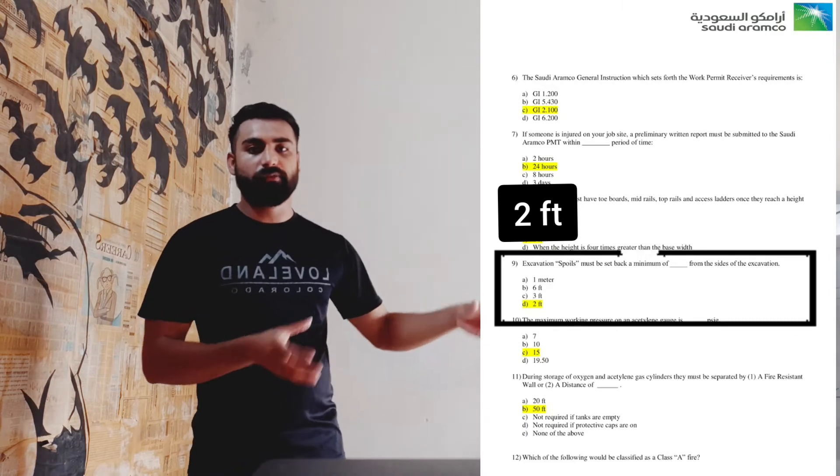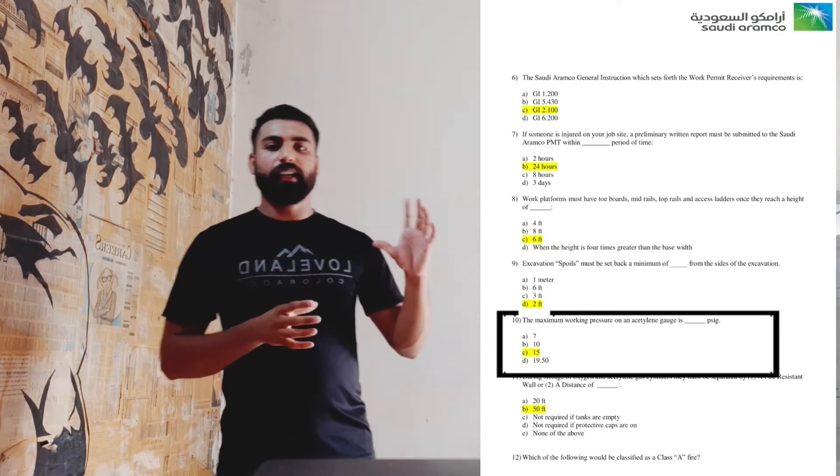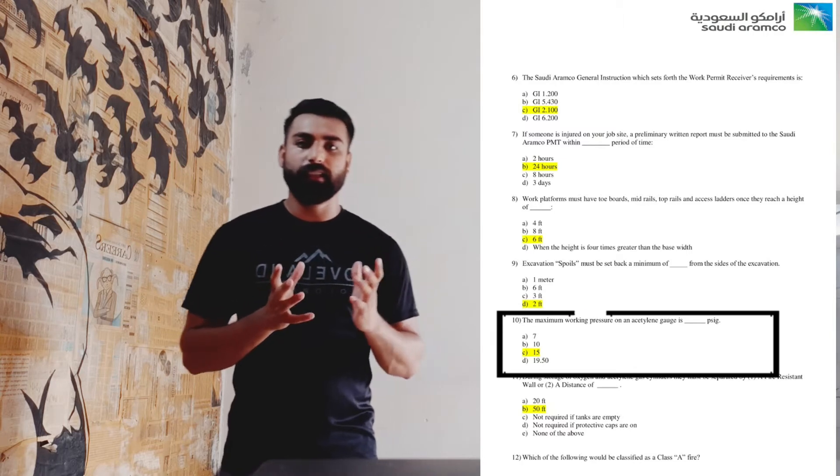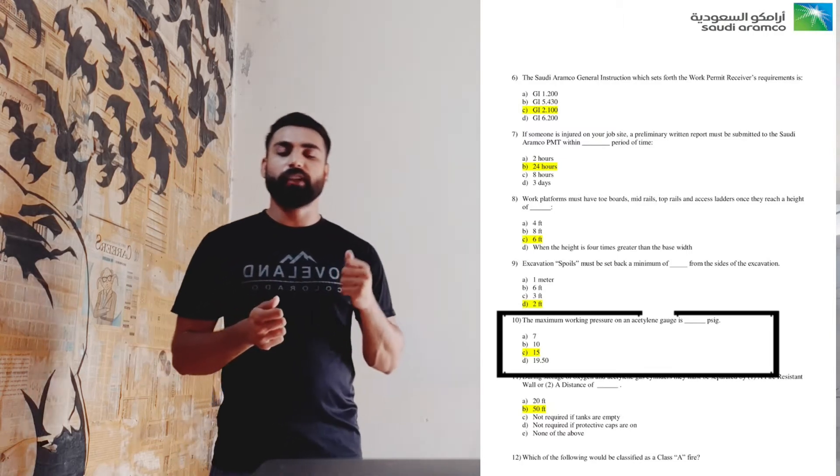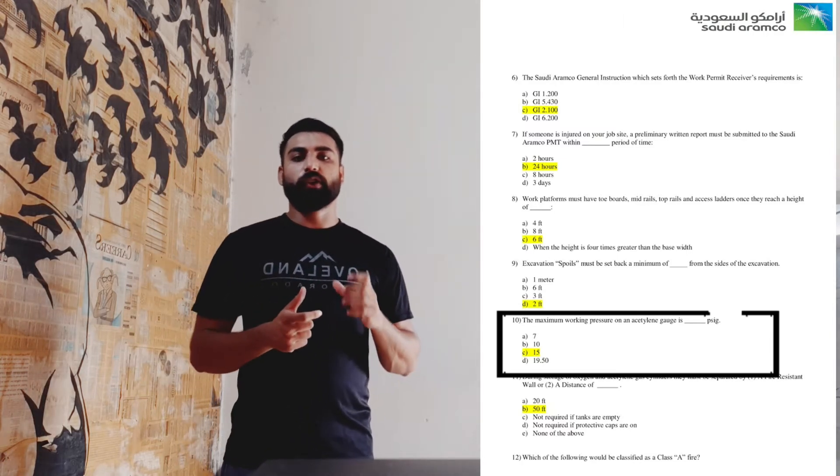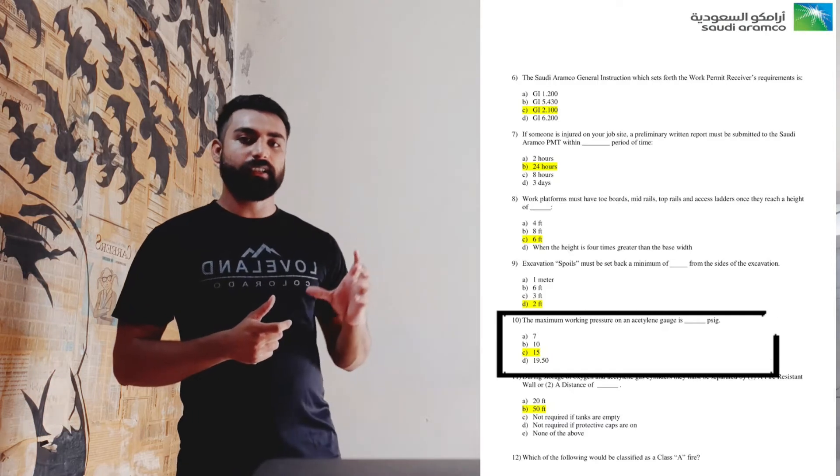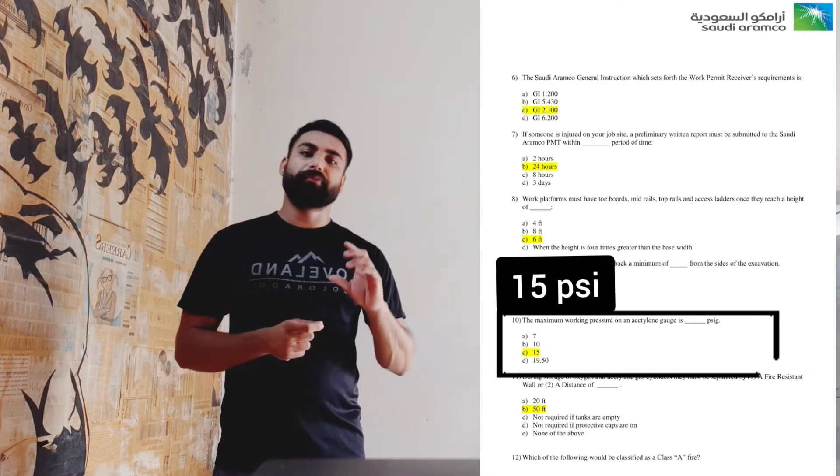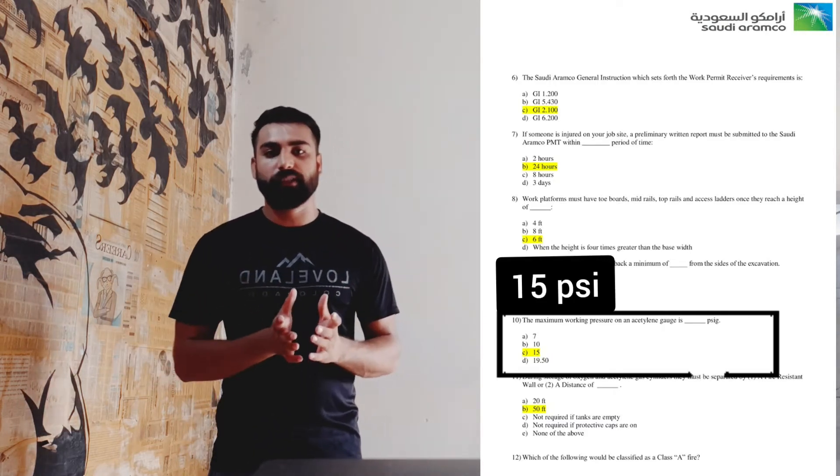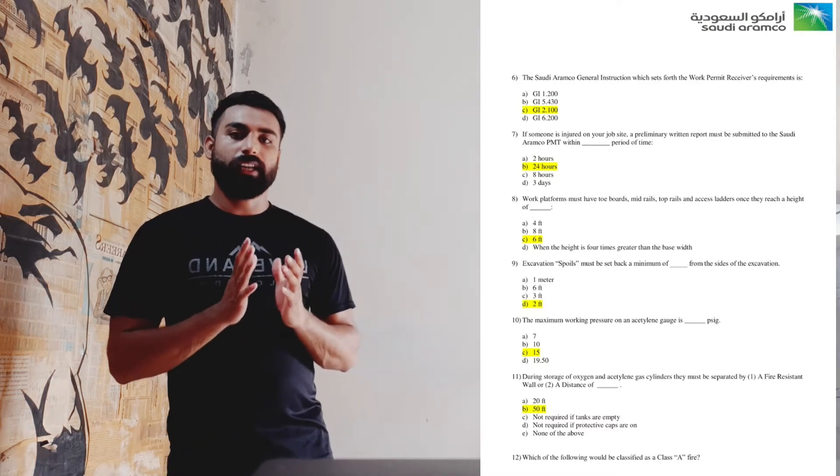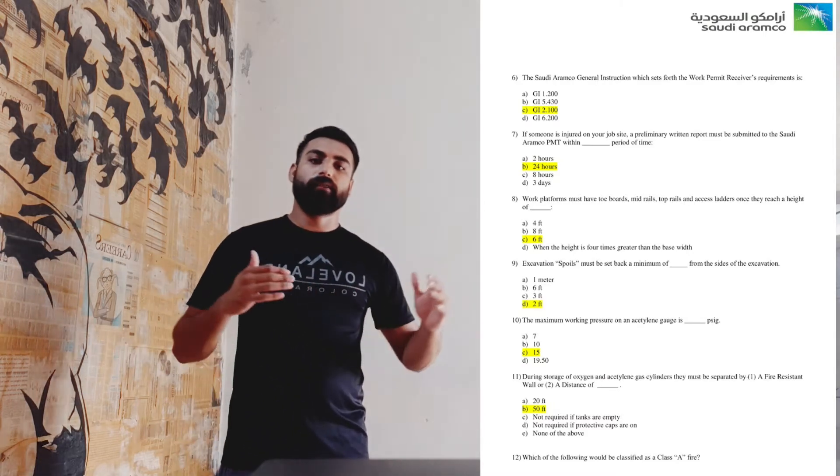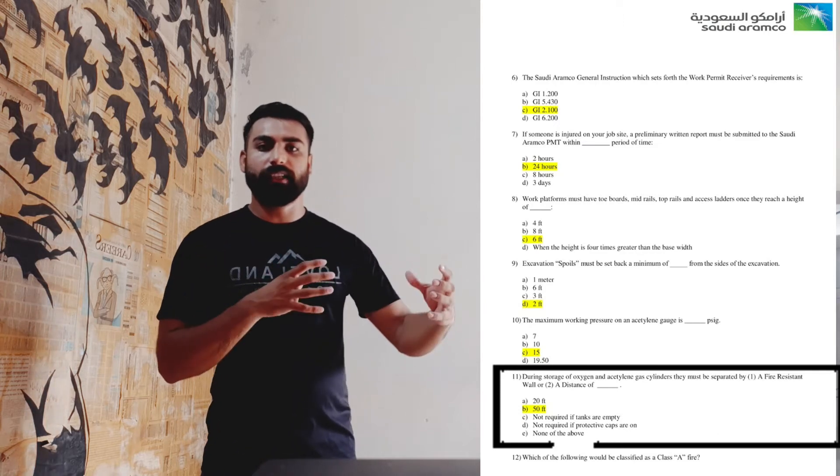Question number ten and eleven are regarding the oxygen and acetylene cylinder. When we are doing gas burning, they are asking what should be the pressure in the acetylene cylinder. That is kept at 15 psi for safety purposes. Question number eleven: they are asking that when we are placing oxygen and acetylene cylinders, how far they should be from each other.